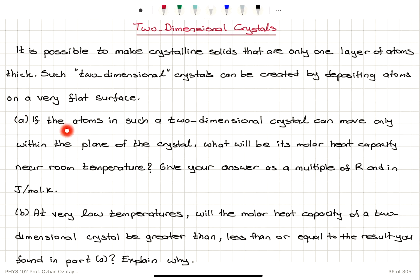Part A. If the atoms in such a two-dimensional crystal can move only within the plane of the crystal, what will be its molar heat capacity near room temperature? Give your answer as a multiple of universal gas constant R and in joules per mole Kelvin.